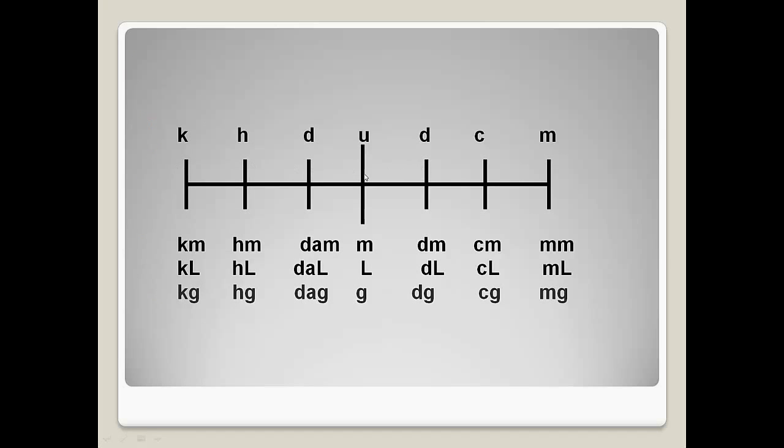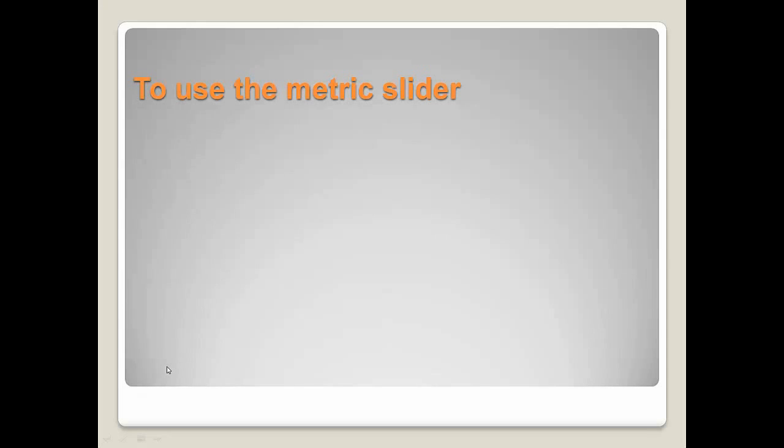Here's my metric slider. King Henry died unexpectedly drinking chocolate milk, with the meter, the liter, and the gram. To put these together, Km would be kilometer. Hl would be hectoliter. DA or DK G would be decagram. Deciliter, centiliter, and milliliter.